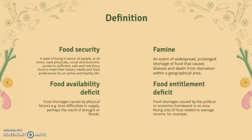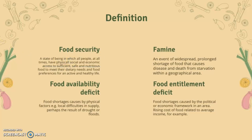Some definitions first. Food security is the state in which all people at all times have physical, social, and economic access to sufficient, safe, and nutritious food to meet their dietary needs and food preferences for an active and healthy life. Then we have famine, which is the event of widespread, prolonged shortages of food that cause disease and death from starvation within a geographical area.